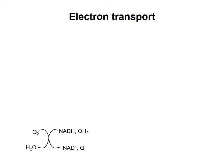To start, we're going to look at the electron transport chain through which electrons from NADH and QH2 are passed from one electron carrier to another and ultimately to molecular oxygen.